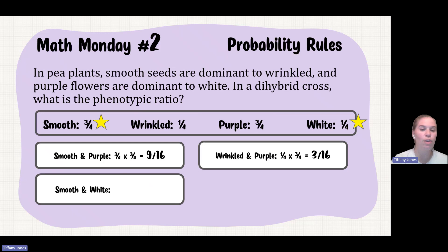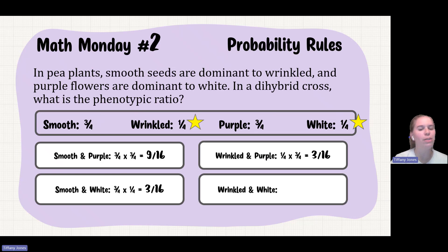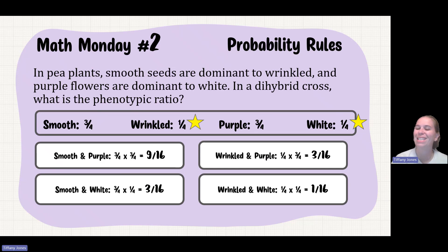Smooth and white: smooth is three-fourths, white is one-fourth — multiply together to get three-sixteenths. Wrinkled and white: wrinkled is one-fourth and white is one-fourth — multiply those together and I get one-sixteenth.